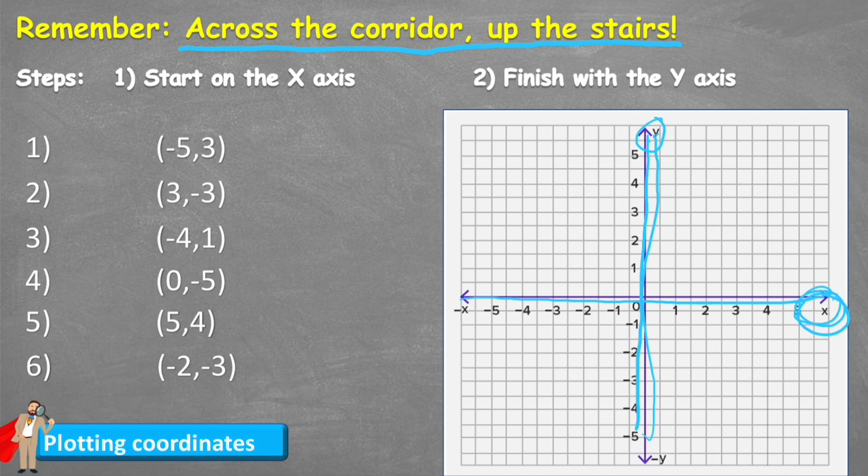So it basically means that the first coordinate is looking on the X axis across before we go up on the Y axis. So let's see that in practice with our first example: minus 5 and 3.